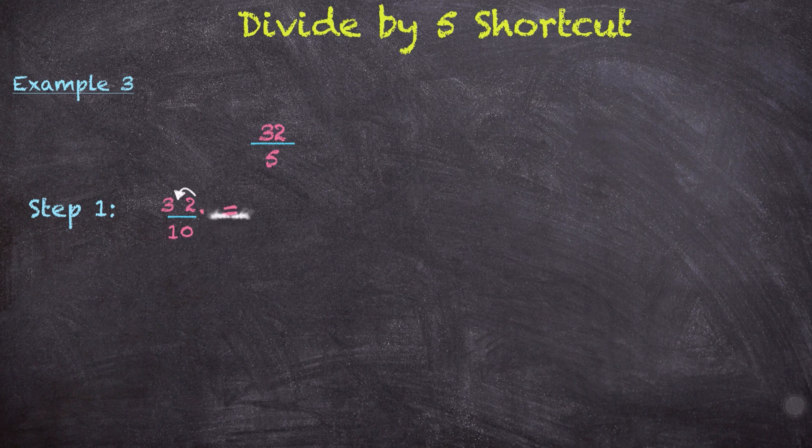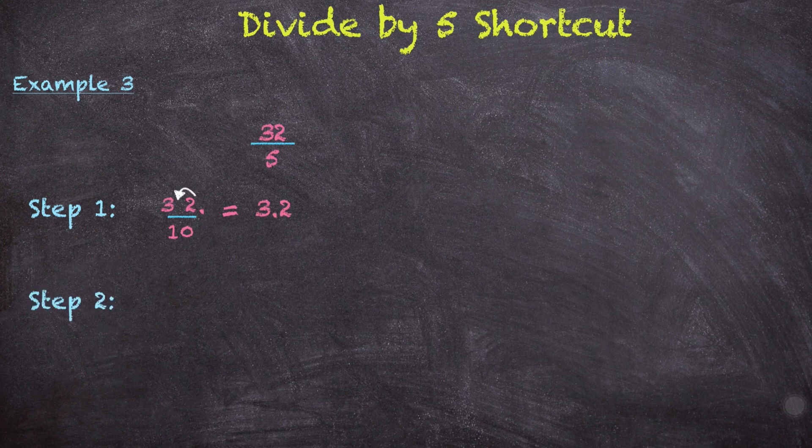Then we come to step 2, in which we will take this 3.2 and simply double it. So the double of 3.2 is equal to 6.4.